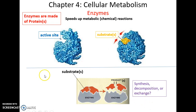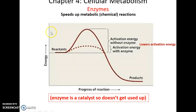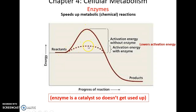Enzymes as catalysts do not get used up, and they lower activation energy. Normally, you have reactants and a huge energy mountain needed to get them to become products — this could take years. But if we add enzymes, the reactants only need to go over a little speed bump; the activation energy is dramatically lowered, and this may take only seconds to lead to those products.